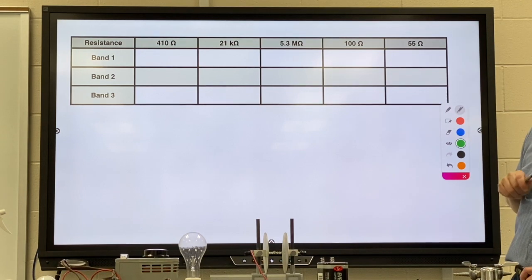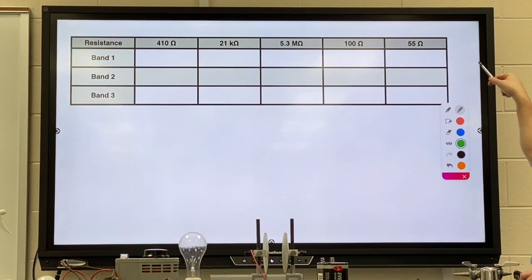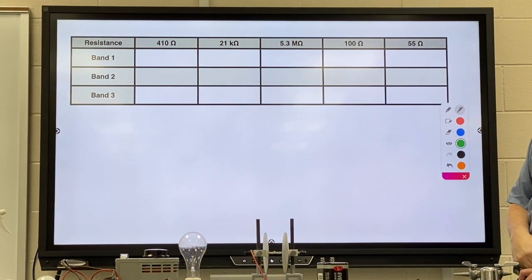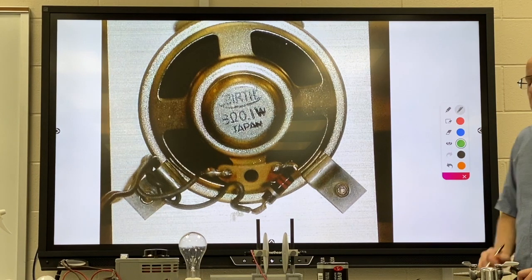Here's some where I'd like you to try going the other way. So I start by telling you the resistance, and I'd like you to figure out what the three bands would be. So again, pause it, and then see how you make out.